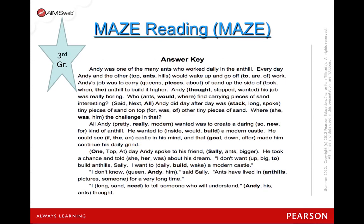A new progress monitoring and benchmark measure for us is the maze passage. This is another alternate subtest of general reading ability. It's given three times per year as a benchmark and takes three minutes, administered to the group. It's considered a modified cloze procedure — students read the first sentence in its entirety, and then after that every seventh word is missing and the children have to determine which word fits into the sentence. This subtest is appropriate for grades 3 and above and we will begin using it in January, and progress monitor for students as needed.